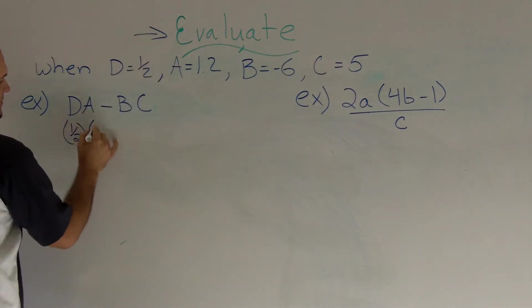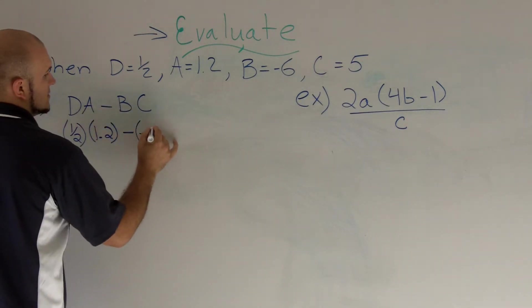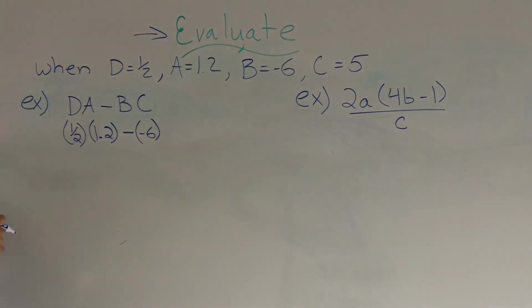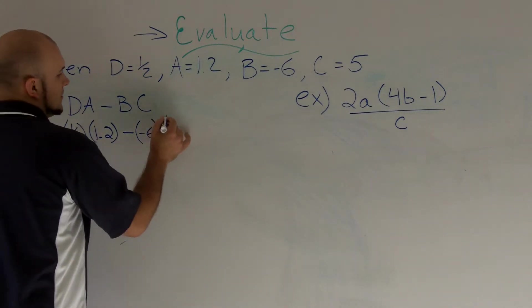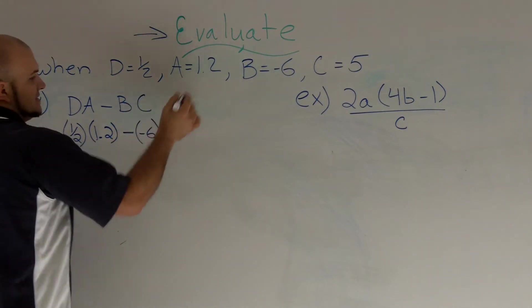A equals 1.2 minus B equals a negative 6. And again, the importance about the parentheses is therefore that I'm noticing that that's a negative 6, and it's a minus a negative 6, which will become very important when I'm finishing off my problem. And then C equals 5.